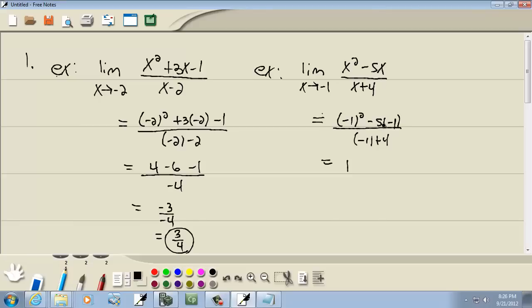Negative 1 squared is 1. Negative 5 times negative 1 gives us a positive 5. And negative 1 plus 4 is 3. So, 1 plus 5 is 6. So, we've got 6 over 3, which gives us 2.